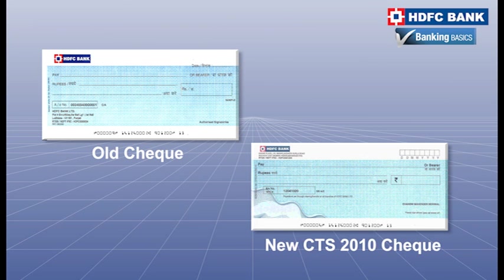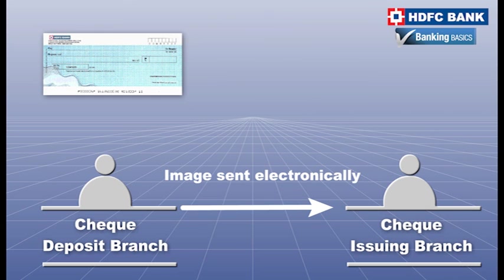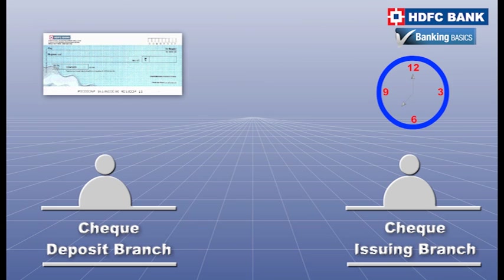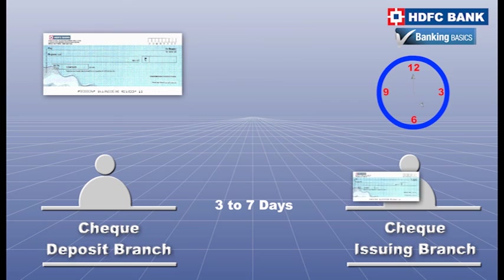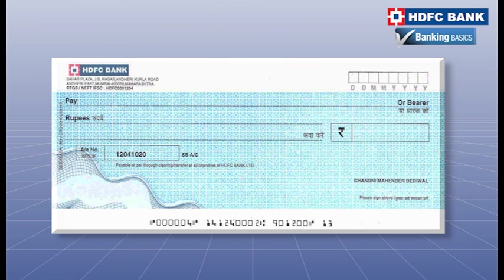In the CTS 2010 system, the check image is captured at the check deposit bank branch and sent electronically to the check issuing bank. Earlier, a check deposited by you at your bank was physically sent to the bank branch of the person who had issued it, and post validation, the amount was credited to your account.